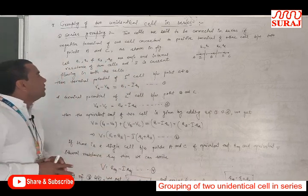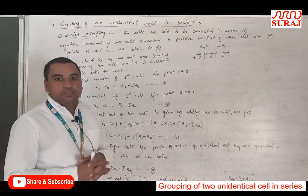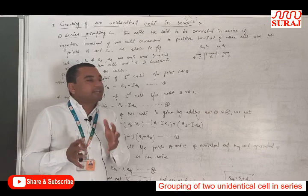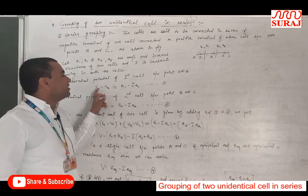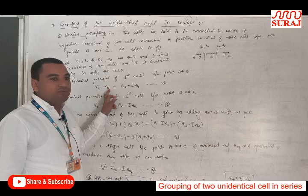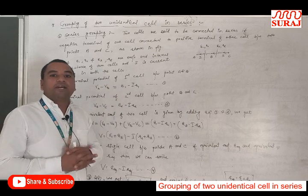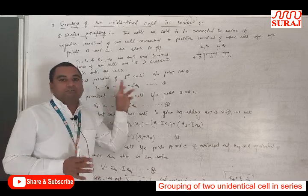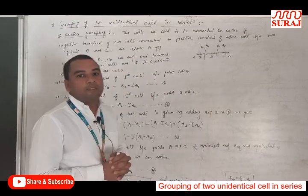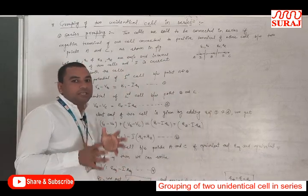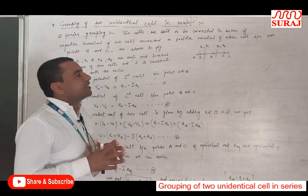Now, the potential difference or terminal potential between points A and B — for the first cell, we can write: V_A minus V_B is equal to E1 minus I·R1. The current between two cells remains the same, because in series combination there is only a single path for the current to travel.